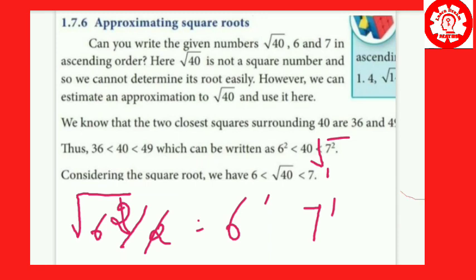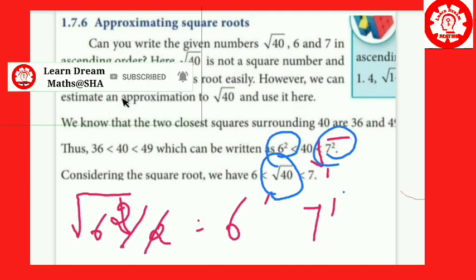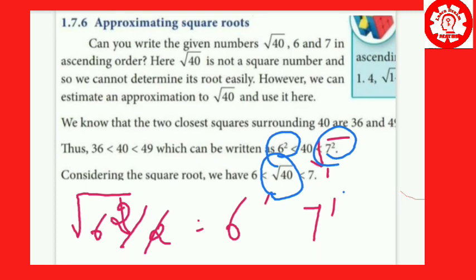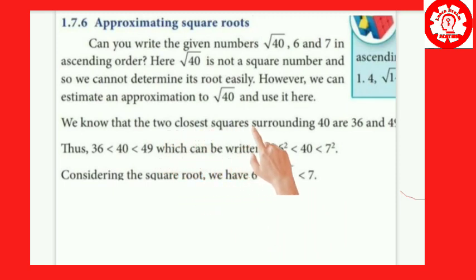Now, thinking about root 40: the root lies between 6 and 7. The root symbol represents this root. To find the root of root 40, we do not need to find the exact root value directly, because we are working with the approximation method. We can find the approximate root value using this concept to get the answer.